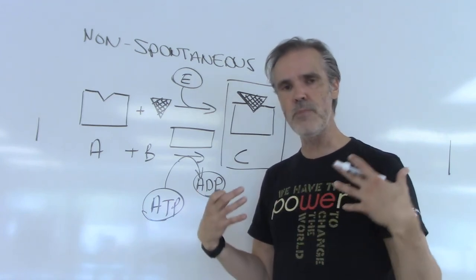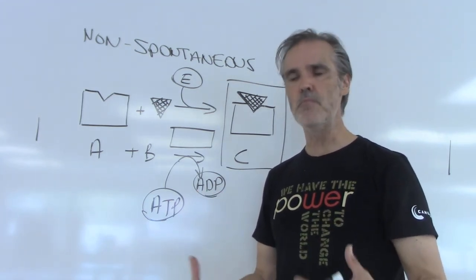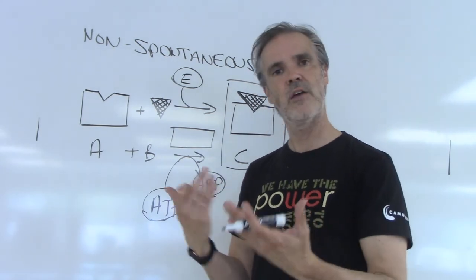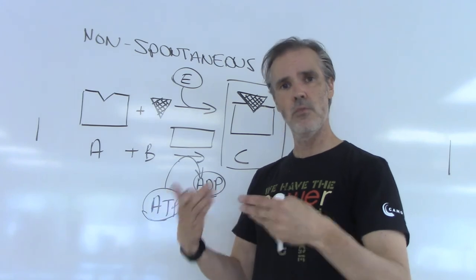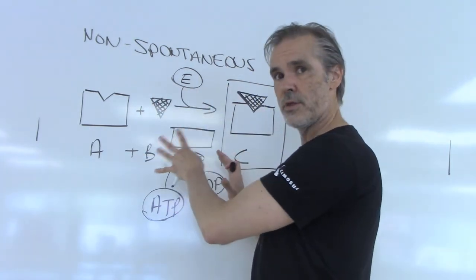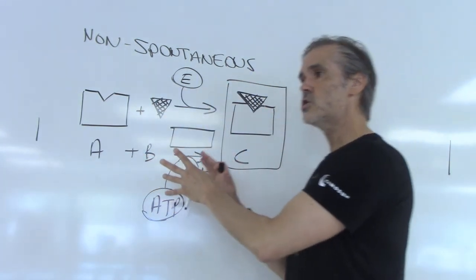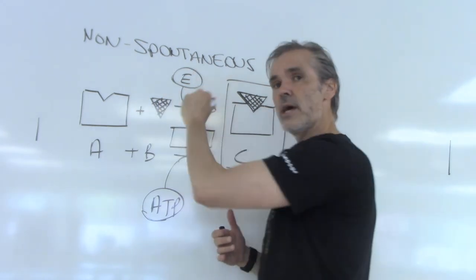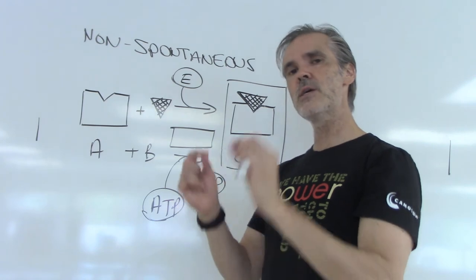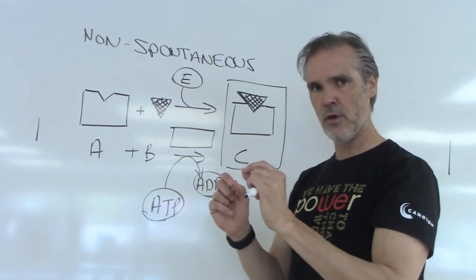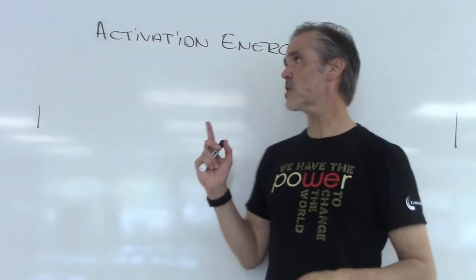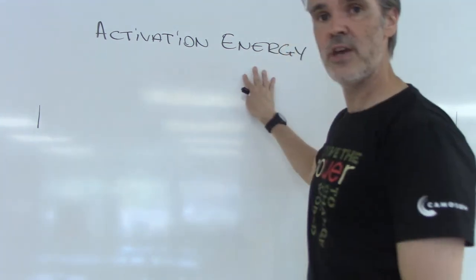This happens all the time in our cells. We generate non-spontaneous reactions constantly — we are growing, we build bones and muscles, we can run and reconstruct. If you have a broken bone, it won't stay broken, it will heal. All of these things allow cells to reconstruct. Non-spontaneous doesn't mean the reaction won't happen — it just means it won't happen by itself. At this point, I need to introduce the concept of activation energy, which is quite important in biochemistry and cell biology.